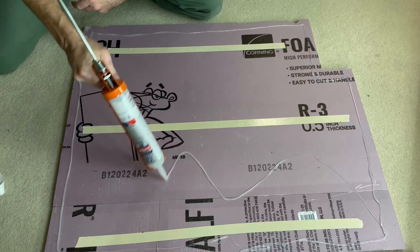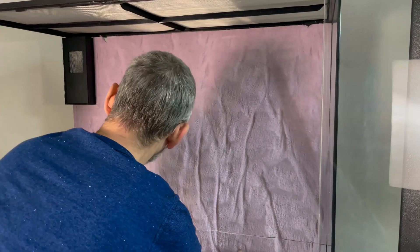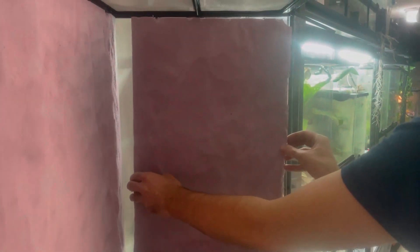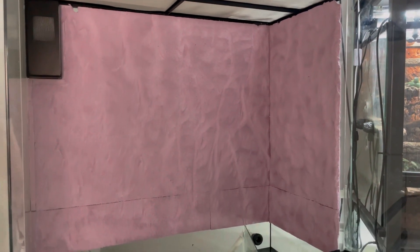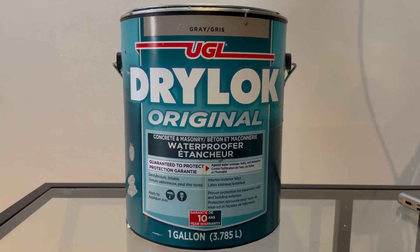We then siliconed on the background and filled in any gaps or cracks with expanding foam. Then we covered it all in drylock.